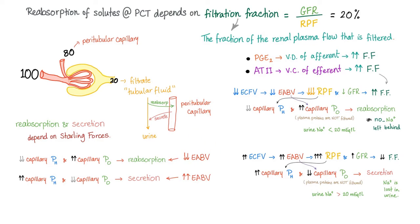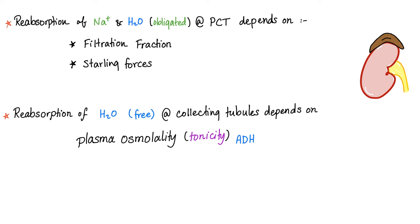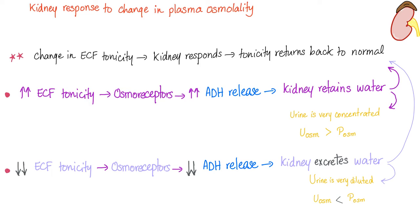When you have low effective arterial blood volume, this favors reabsorption. High effective arterial blood volume favors secretion. Reabsorption of sodium and water — where water is obligated — at the proximal tubule depends on the filtration fraction and Starling forces. But reabsorption of free water at the collecting tubule, meaning water without electrolytes, depends on plasma osmolality or tonicity. The kidney responds to changes in plasma osmolality; when ECF tonicity changes, the kidney responds and tonicity returns to normal.